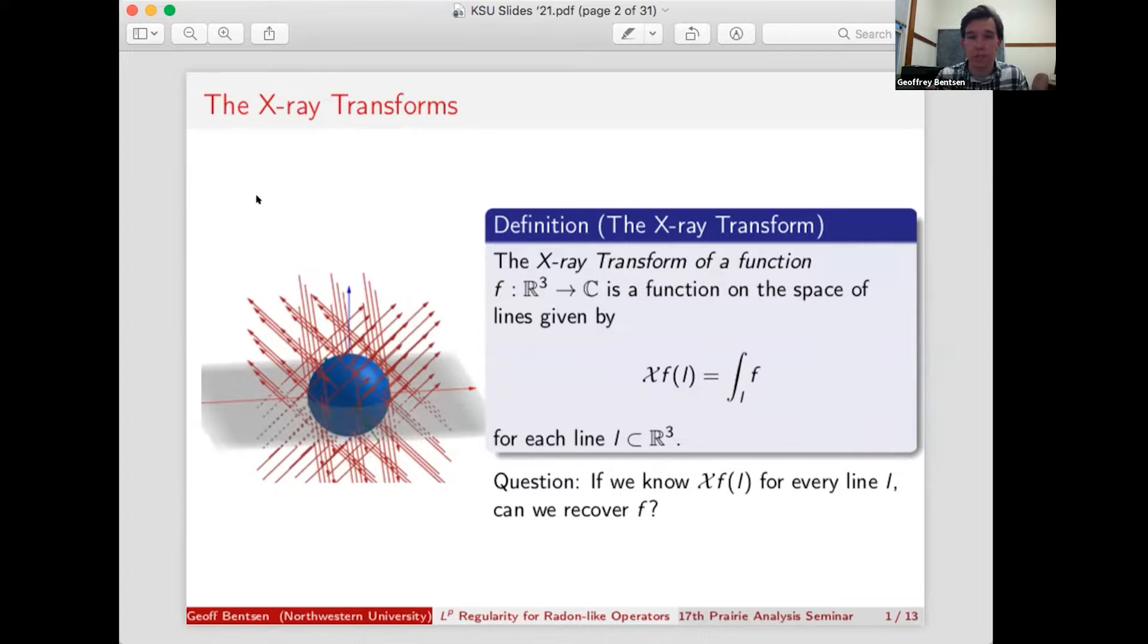So the x-ray transform is on this manifold of lines, and this unsurprisingly has medical applications. That's why it's called the x-ray transform. But it's also an operator studied in the field of integral geometry. One big question people ask is, if we know the x-ray transform of a function along every line, can we recover f? In other words, does the x-ray transform have an inverse?